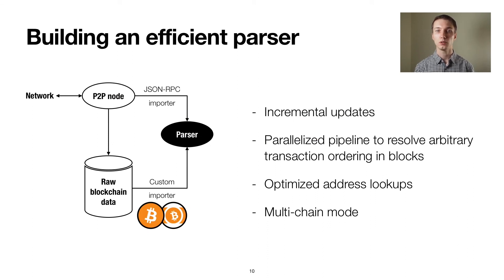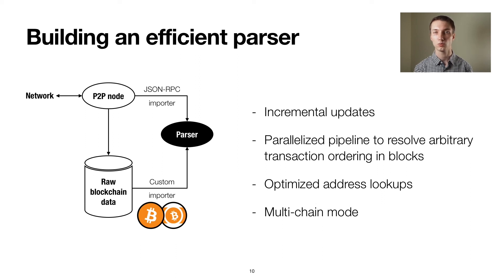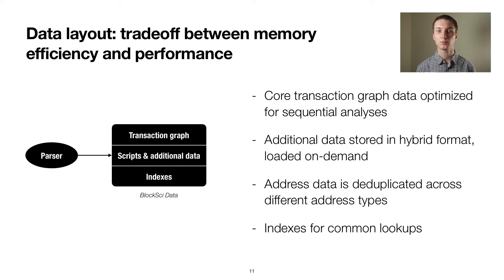BlockSci consists of two main components: a parser and an analysis library. The first challenge was to design an efficient transformation process that can take the blockchain data from a full node and convert it into an optimized format. Our parser can read data either from the raw block files on disk for Bitcoin and Bitcoin Cash, or from the JSON-RPC interface of smaller cryptocurrencies that provide the same API as the Bitcoin Core client. It allows to incrementally update the blockchain, works with arbitrary orderings of transactions within blocks — which was important to support Bitcoin Cash — and comes with many other optimizations to make it highly efficient. Martin Plattner has also been developing a multi-chain mode that is optimized for parsing and analyzing forked blockchains that share a lot of common history. The parser produces the BlockSci data with a layout optimized for sequential analysis of the transaction graph.